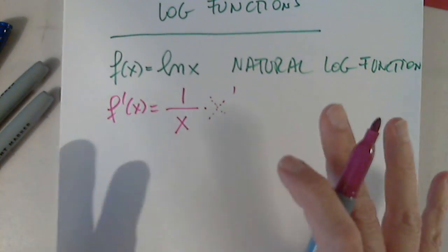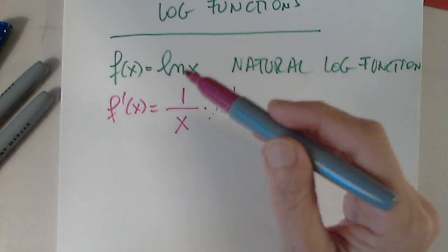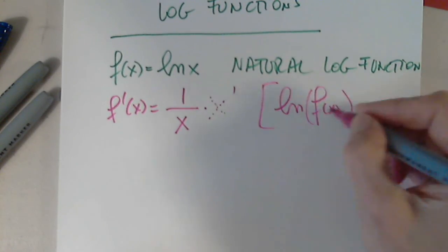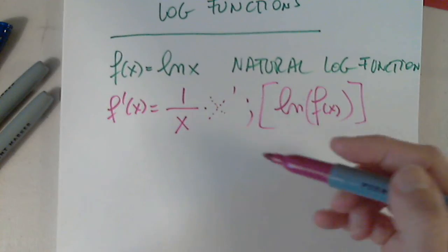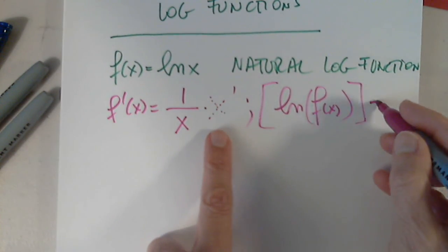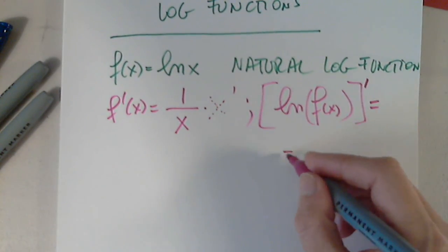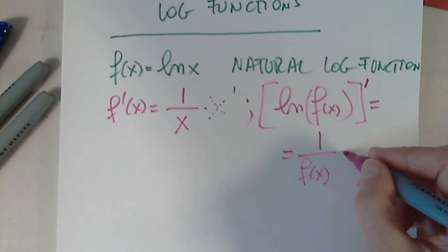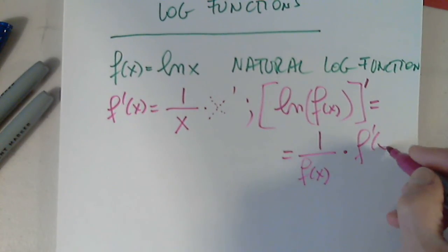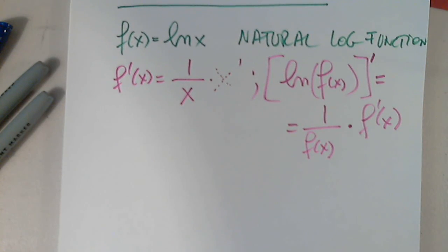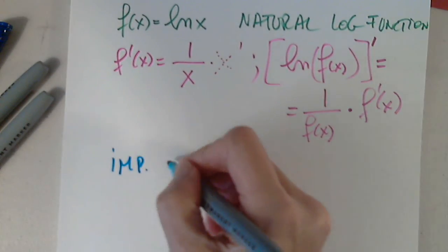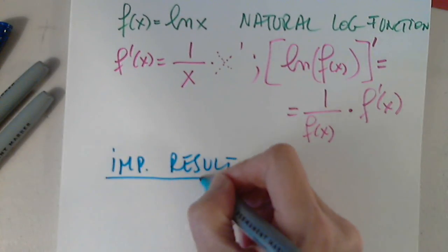Before we move on to differentiating the natural log of a function — something like ln(f(x)) — when I differentiate that I have to follow the chain rule. So the derivative is 1 over f(x) multiplied by f prime of x. This is an important result.